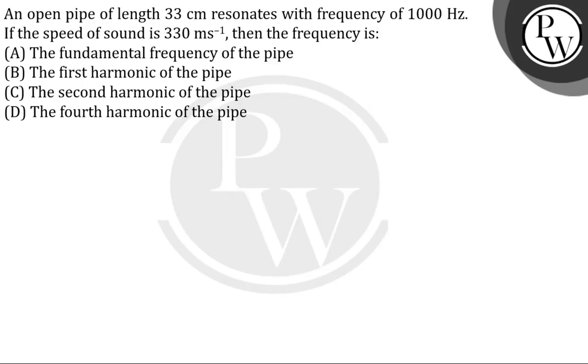Given here is an open pipe of length 33 centimeters that resonates with a frequency of 1000 Hertz. If the speed of sound is 330 meters per second, we have to find the mode of vibration.